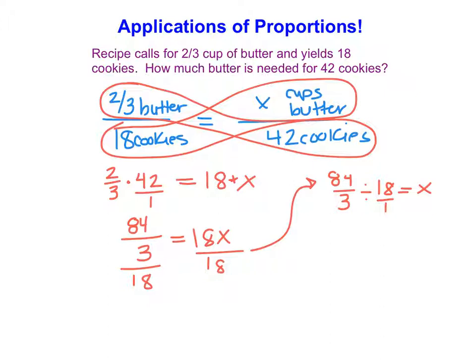You should know how to work with your fractions at this point. So I have 84 over 3, and I do keep, switch, flip. So then I have 84 over 54, which then from here, if I simplify my fraction, I find 42 over 27.